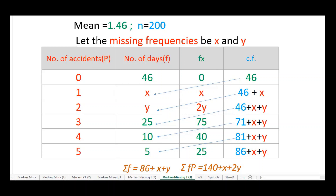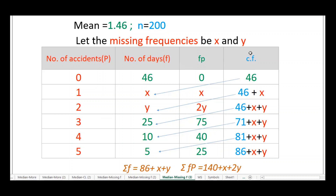Since the mean is given, compute f×p values: 46×0 = 0, 1×x = x, 2×y = 2y, 3×25 = 75, and so on. Also compute cumulative frequencies: 46, then 46 plus x, then 46 plus x plus y, then 71 plus x plus y, and so on. These cf values are needed for the median calculation.